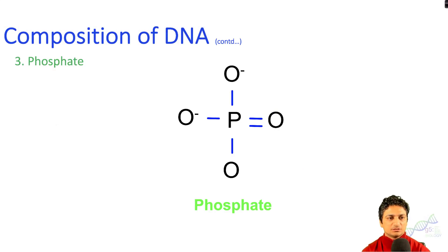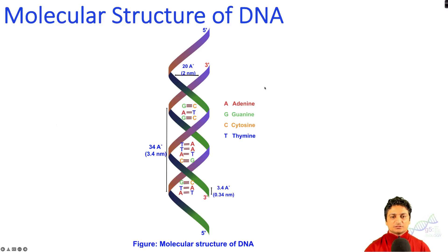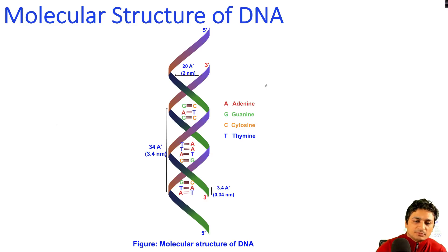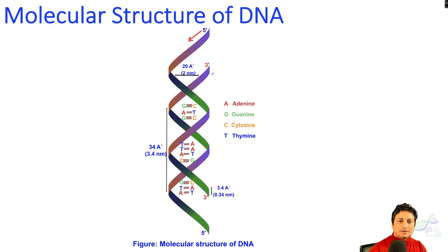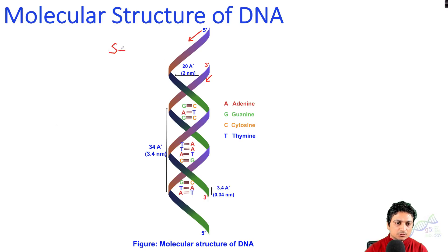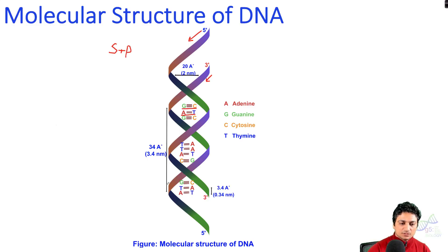Next we'll talk about the molecular structure of DNA. This is the double helical structure discovered by Watson and Crick. According to their model, the two DNA strands are wound around each other in a right-handed manner and are anti-parallel to each other — one strand runs from five-prime to three-prime while the other runs from three-prime to five-prime. The backbone is formed by sugar and phosphate.